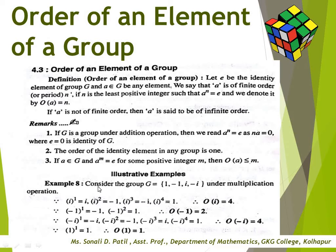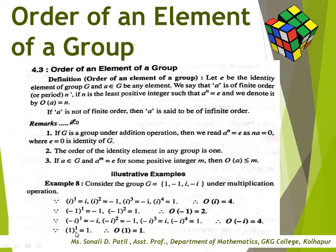Example: consider G = {1, -1, i, -i} under multiplication. We have i¹ = i, i² = -1, i³ = -i, i⁴ = 1, so o(i) = 4. Also (-1)¹ = -1, (-1)² = 1, so o(-1) = 2. For -i: (-i)¹ = -i, (-i)² = -1, (-i)³ = i, (-i)⁴ = 1, so o(-i) = 4. And 1¹ = 1 so o(1) = 1, since 1 is the identity element, confirming that the order of the identity is always 1.